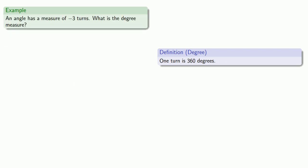Or maybe I have an angle with a measure of minus three turns. So again, we have minus three turns. And since a turn is 360 degrees, I can replace and calculate.